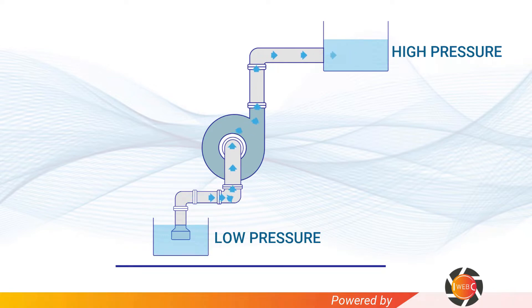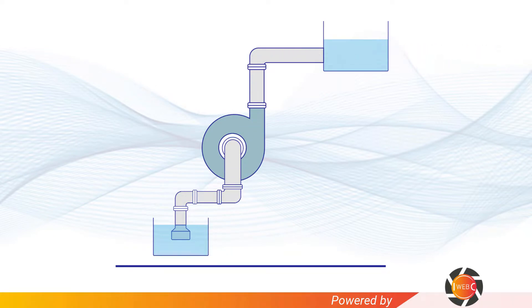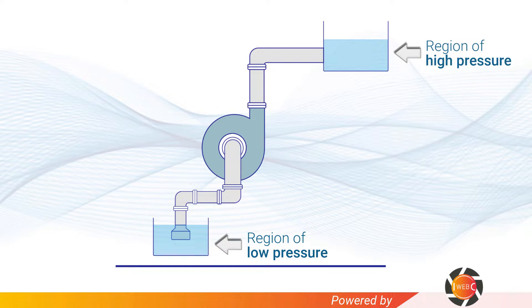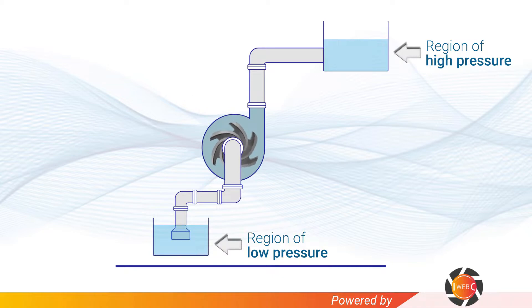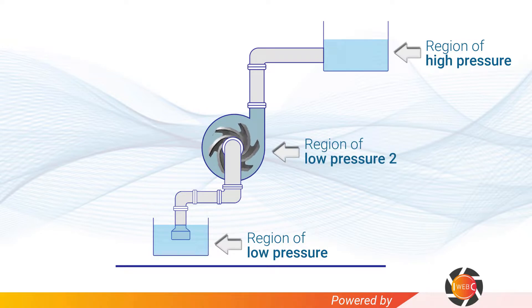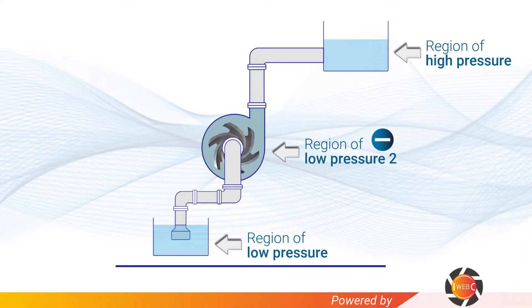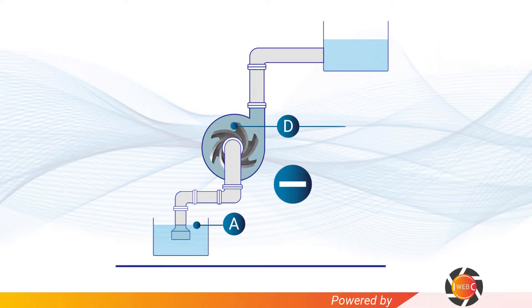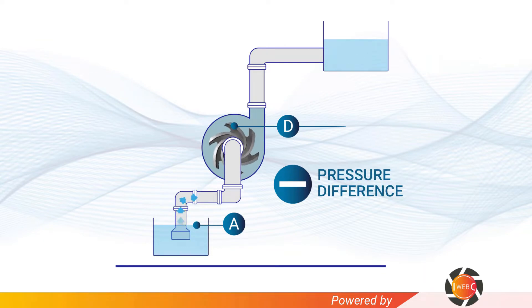Looking at this scheme, at the bottom we see a reservoir containing fluid — in this case water — which represents our region of low pressure, while the reservoir at the top represents our region of high pressure. Initially, some water is already present inside the pump. When the impeller starts rotating, the water is cut off by its blades, creating a region of low pressure. Because the pressure inside the pump is much lower than in the lower reservoir, water is sucked into the pipe and flows from the lower reservoir up to the pump.